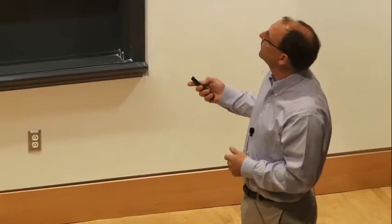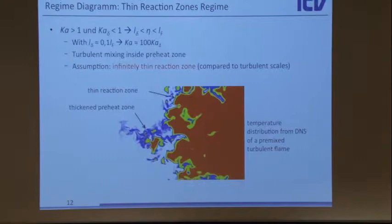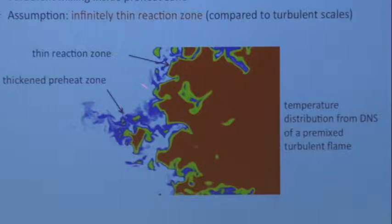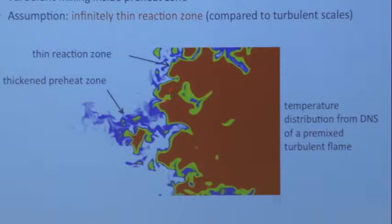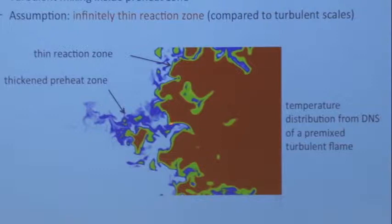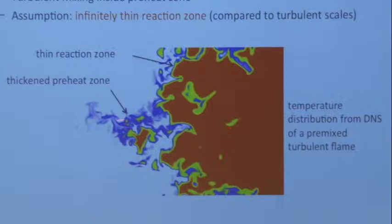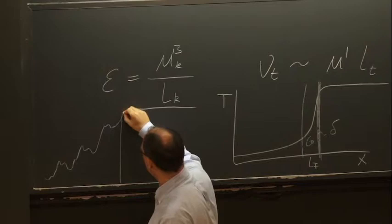Here's an example from DNS. The burnt region is on one side, the unburnt region on the other, and you still get a sharp interface. But in the preheat region, it's broadened by the turbulence — if you look at a slice, the temperature goes up gradually rather than in a thin laminar profile. The reaction zone may still be present but the preheat region is spread out. That's the thin reaction zones regime.